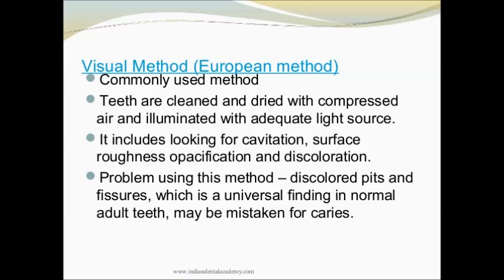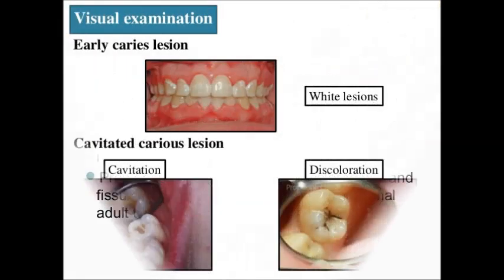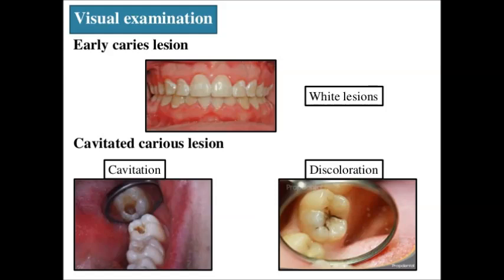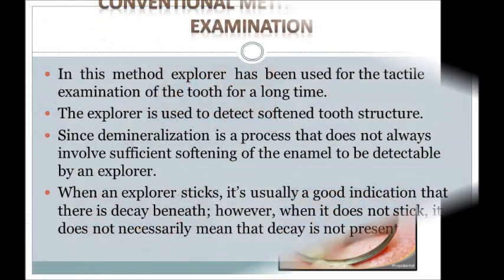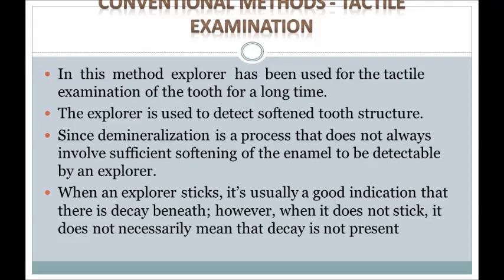It includes looking for cavitation, surface roughness, opacification, and discoloration. A problem of using this method is discolored pits and fissures, which is a universal finding in normal adult teeth, and may be mistaken for caries. For the tactile method, an explorer and dental floss are used. Explorers are widely used for detection of carious tooth structure, and are also useful to remove plaque and debris and check the surface characteristics of a suspected caries lesion. When an explorer sticks, it is usually a good indication that there is decay beneath.